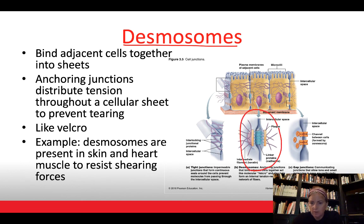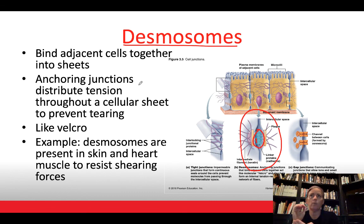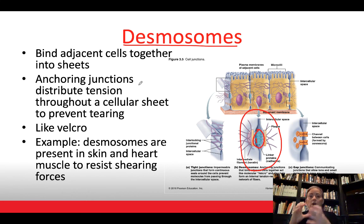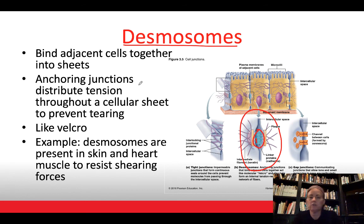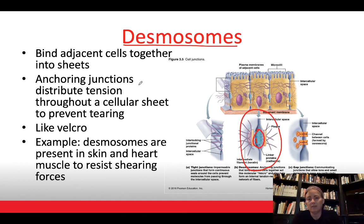The second type of cell junction is the desmosome, which I describe like velcro. These bind sheets of tissue together and are found in tissues subject to a lot of shear, like skin and heart muscle — which contracts 70 times a minute for your entire life. Desmosomes distribute tension along the entire sheet of tissue, making it less likely to tear.